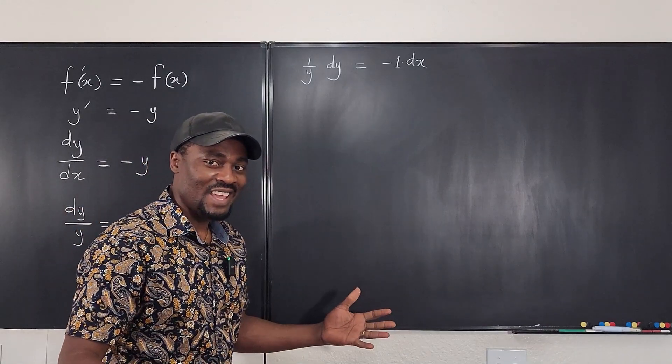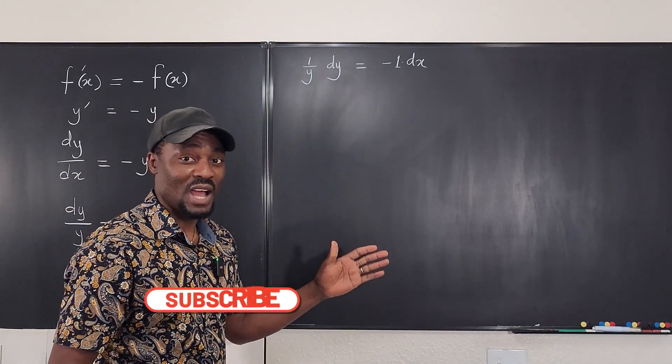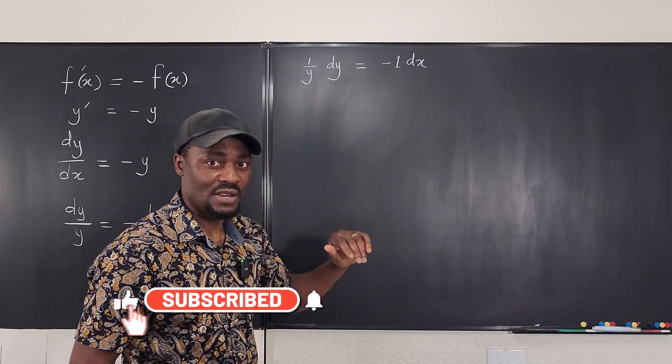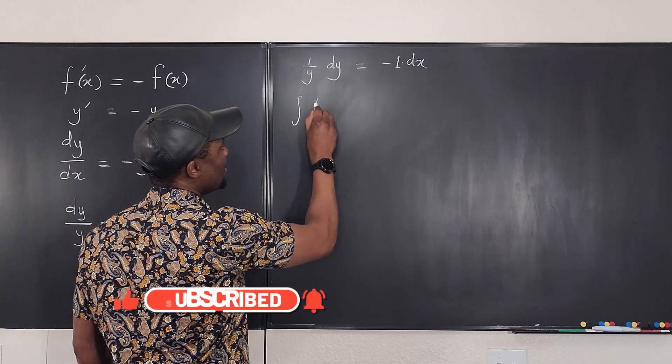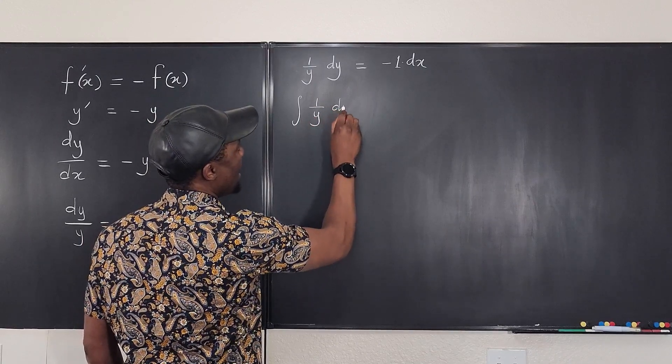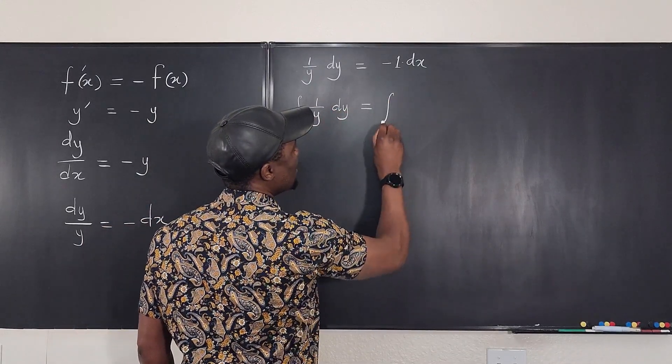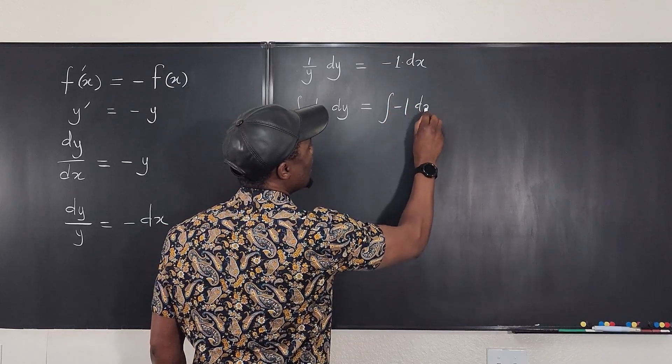So, now, we can take the integral, or we can integrate both sides because these are both differentials. Okay, so, if I integrate this, I get the integral of one over y dy will be equal to the integral of negative one dx.